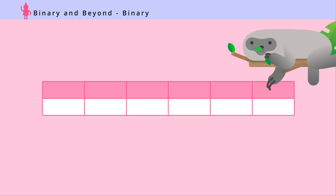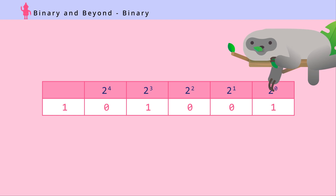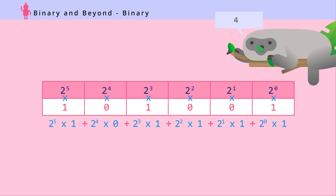There are six places in the number 1-0-1-0-0-1. Step 1: Write it out. Step 2: On top of each number, put binary place values starting from the very right — 2 to the 0, 2 to the 1, 2 to the 2, 2 to the 3, 2 to the 4, and 2 to the 5. Step 3: Multiply the place value with the binary digit to get the actual value of each place. Step 4: Add them all up. Mr. Sloth is 41 months old.